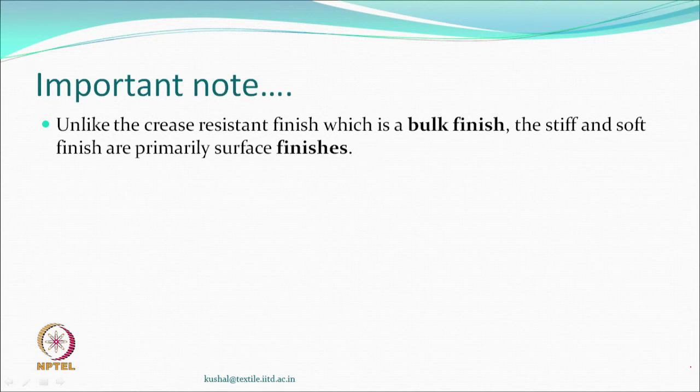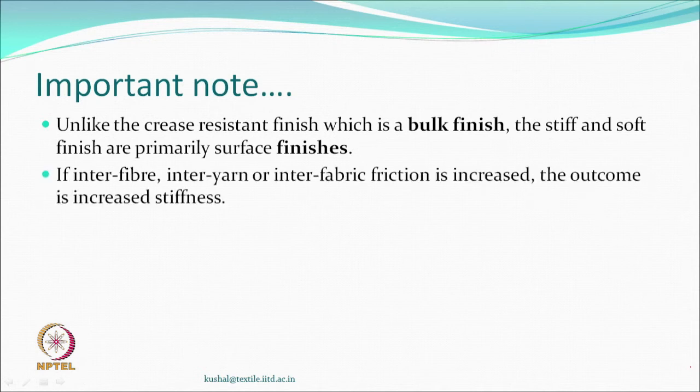Unlike crease-resistant finish, which is a bulk finish, the soft finish is primarily a surface finish. It reduces inter-fiber, inter-yarn, and inter-fabric friction. If friction is reduced, the fabric becomes soft; if you increase it, the material becomes stiff.